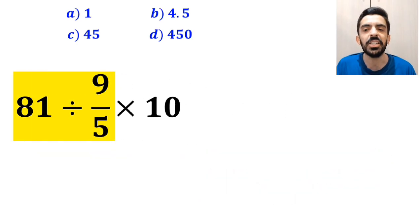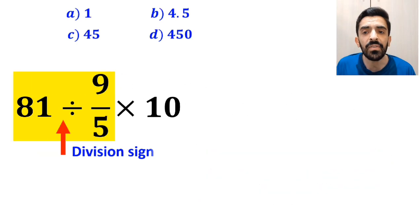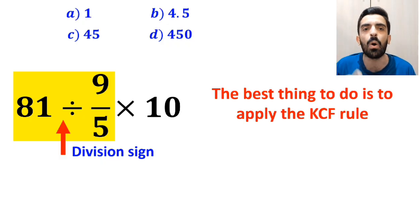So we start with the expression 81 divided by 9 over 5. Okay, whenever we see a division sign between two terms, the best thing to do is to apply the KCF rule.